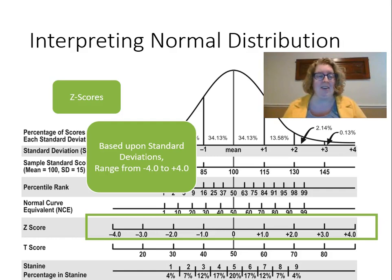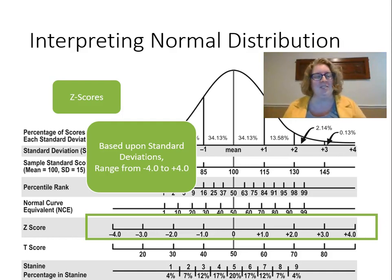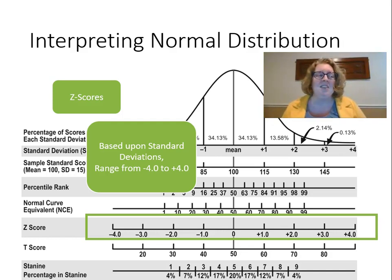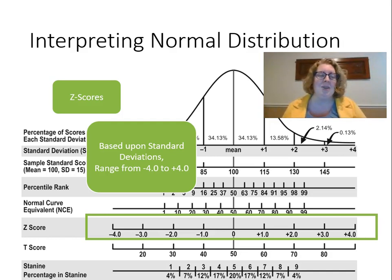Z-scores are the same as standard deviation units and range from negative four to four. A z-score of zero means an average score; a z-score of one means one standard deviation above the mean. We don't usually use z-scores in schools because most parents don't want to hear that their kid has a negative number — it's just not a great way to communicate. Psychologists and people in biology and other sciences who don't deal with people use these scores in statistics, but in education we tend not to use them.